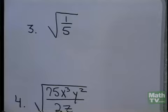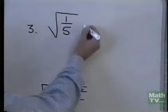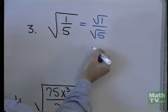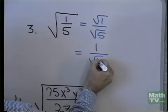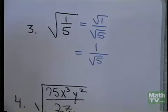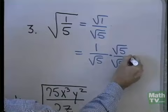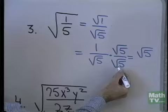Let's put the square root of 1/5 into simplified form. It's not in simplified form because we have a fraction under a radical. I'll separate this into two separate radicals — square root of 1 over square root of 5 — using property 2 for radicals. That gives 1 over square root of 5. This is not in simplified form because I have a square root in the denominator. To get rid of that, I'll rationalize the denominator by multiplying the whole fraction by square root of 5 over square root of 5. In the numerator I get square root of 5, and in the denominator I get square root of 25, which is just 5.